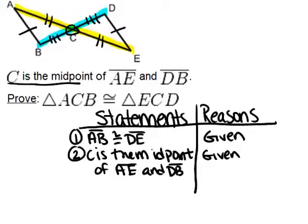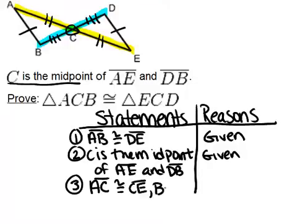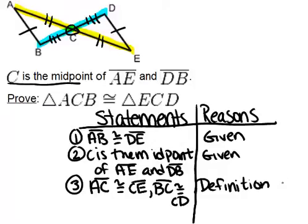So because C is the midpoint, that told us two things. It told us that AC was congruent to CE, and also that BC was congruent to CD. And the reason for that is the definition of midpoint. Because C is a midpoint, it is right in the middle of those two line segments, and so we know two pairs of congruent lengths based on that.